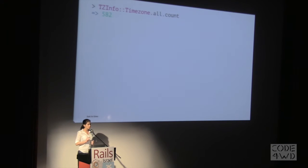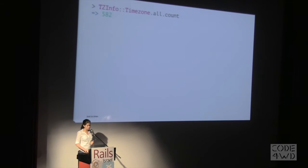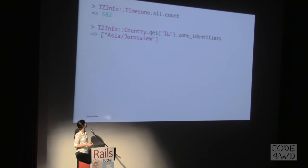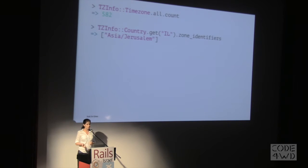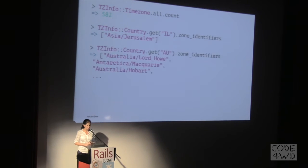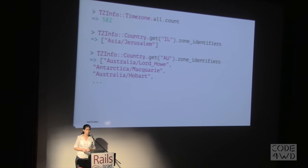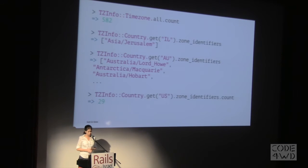TZInfo provides support for about 582 different time zones. When I checked how many time zones there are in Israel, Israel is very lucky because we only have one. I used to live in Australia — Australia has six states and two territories and about 13 different time zones. I currently live in the States, and in the States we have 29 different time zones.